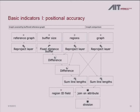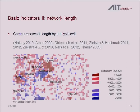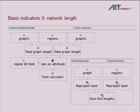A second well-used indicator is simply comparing network length per region: divide the area into cells, then check how long the OpenStreetMap network is versus the other road network in each cell. I found this in the Haklay 2010 study — you can see regions where OSM is longer than the Ordnance Survey graph and regions where it's the other way around. In the toolbox you input two graphs and the regions, compare total graph length, and the output is a cell layer with an attribute for road length difference.